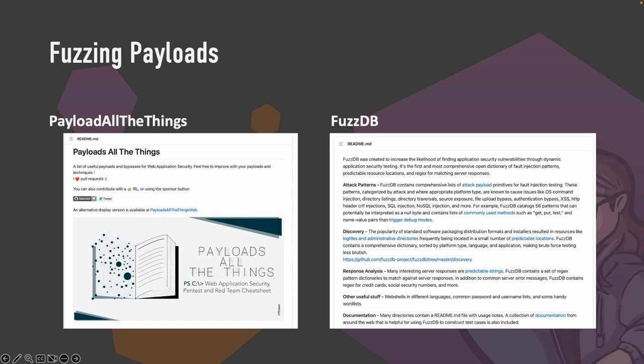Some of the best ways to find these is by using fuzzing payloads. My two favorite fuzzing payload GitHub projects are: 'PayloadsAllTheThings,' which is sorted by vulnerability type — you can go into SQL injection, for example, and find generic payloads to figure out software versions; and 'FuzzDB,' which has a category for attack patterns you can throw into whatever fuzzer you're using — Burp Intruder, ffuf, DirBuster, or whatever. Two really great GitHub repositories. If you're only going to look at one, make it PayloadsAllTheThings — so helpful when starting out.